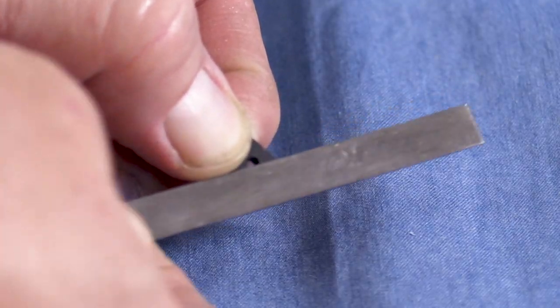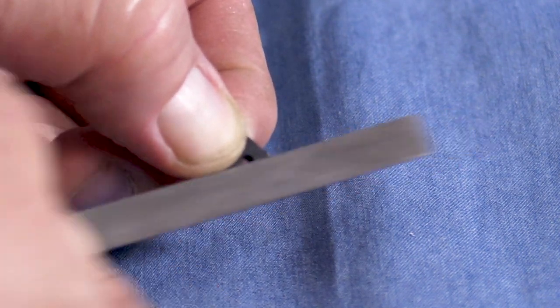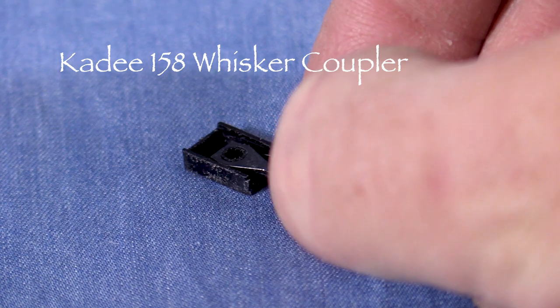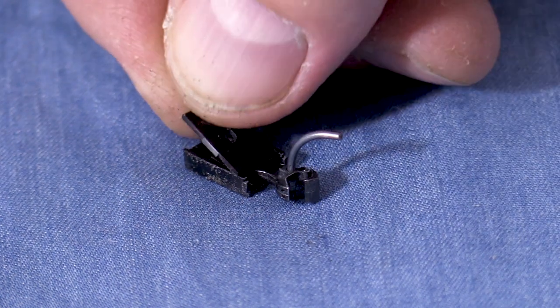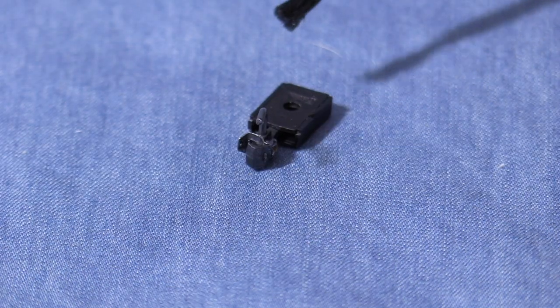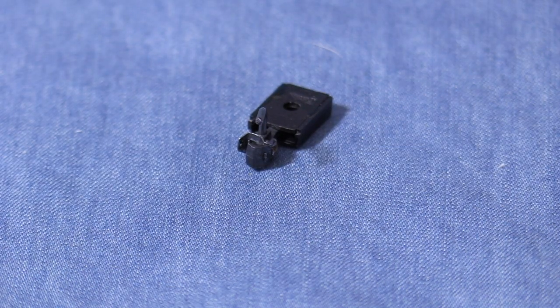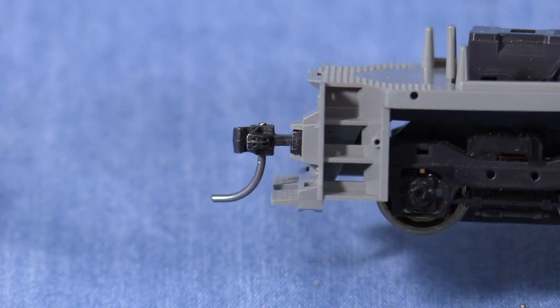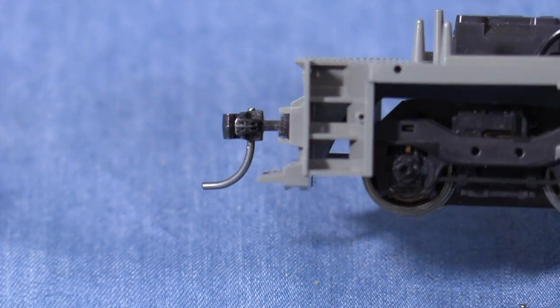To show you what I mean I'll put a coupler together. I'll start by filing the lip off of a KD Draft Gear box. Then I'll assemble a box with a KD-158 whisker coupler. I'll use a couple of drops of liquid styrene cement to help keep the lid in place. I'm going to work on 7482's pilot first. Since it's undecorated gray plastic, it's a little easier to see what I'm doing.